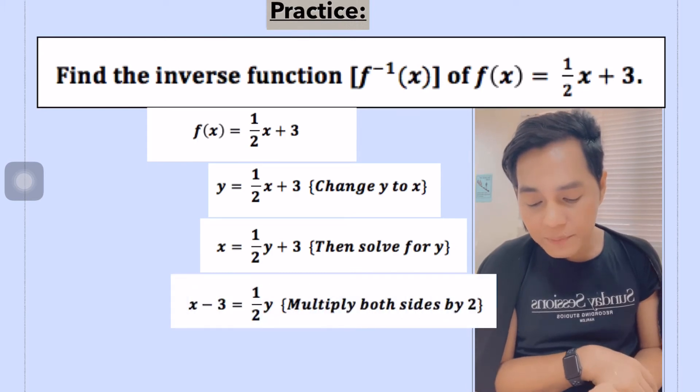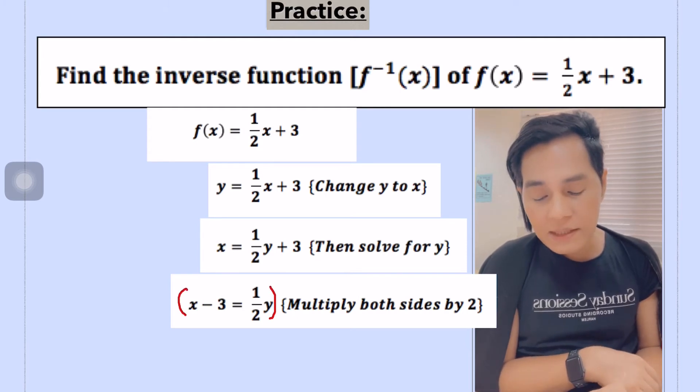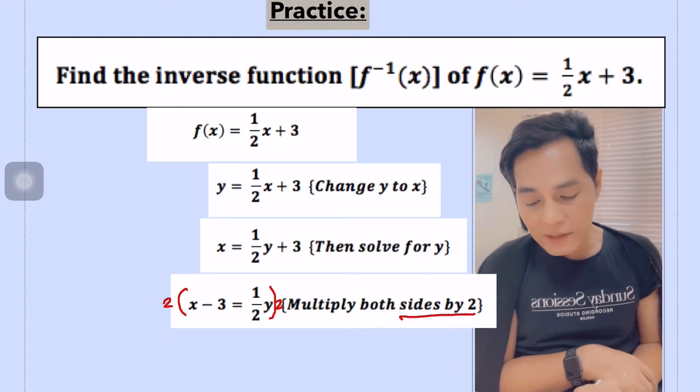So in that case, what will happen now? Just transpose 3 on the other side, that becomes negative. And then we have one half y. And then we multiply both sides by 2 in order to solve for y to remain y in one of the sides of the equation.